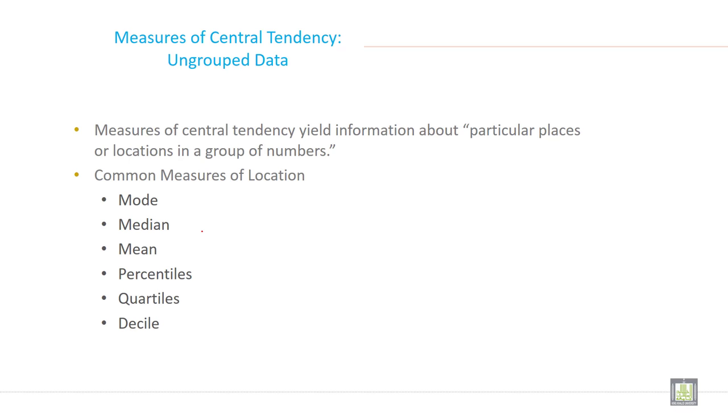Measures of central tendency yield information about particular locations in a group of numbers. Common measures of location include mode, median, mean, percentile, quartile, and decile.